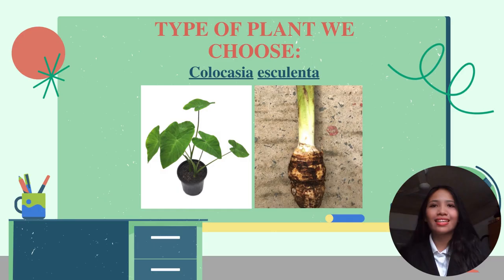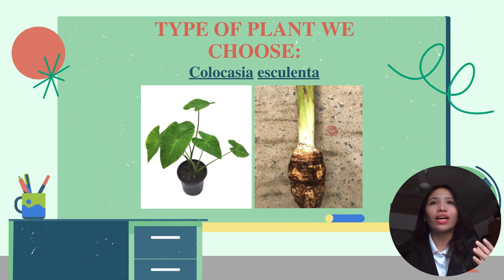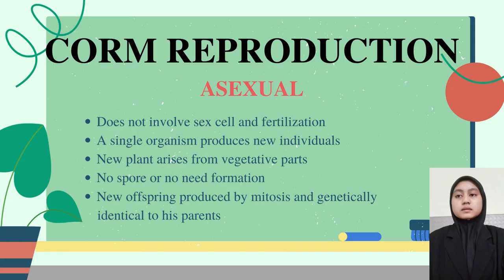Since our group topic is about corms in vegetative propagation, this is the type of plant we chose for propagation: Colocasia esculenta.